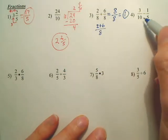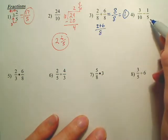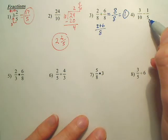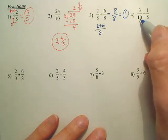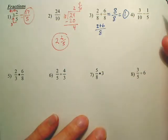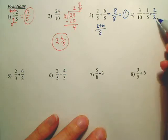Now here, can I just add the tops? No, because are the bottoms the same? No. I want the bottoms to be the same. Could I make this 5 into a 10? What do you multiply 5 by so it becomes 10? 2. So watch this. What's 2 over 2? 1.